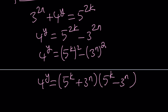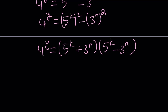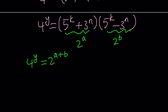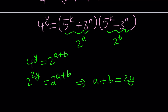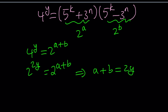Now, 4 to the y is a power of 2, and a power of 2 can only be made from powers of 2. So both factors must be powers of 2. I'm going to set them equal to 2 to the power a and 2 to the power b. This gives us 4 to the y equals 2 to the a times 2 to the b, which is 2 to the power a plus b. Since 4 is 2 squared, we get 2 to the 2y equals 2 to the a plus b, so a plus b equals 2y. Also, since the first factor is a sum and the second is a difference, 2 to the a is greater than 2 to the b, so a is greater than b.